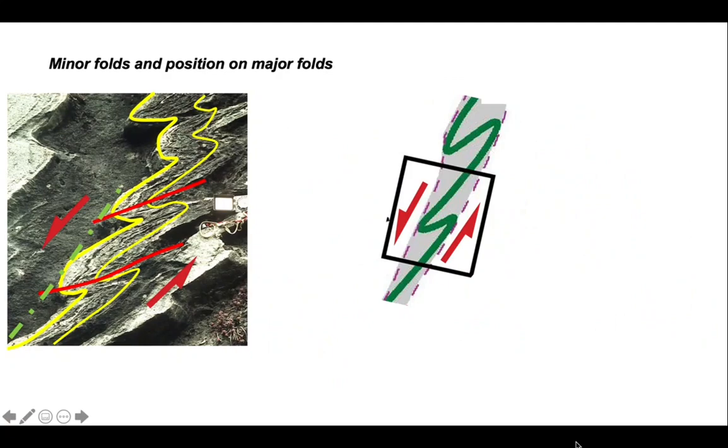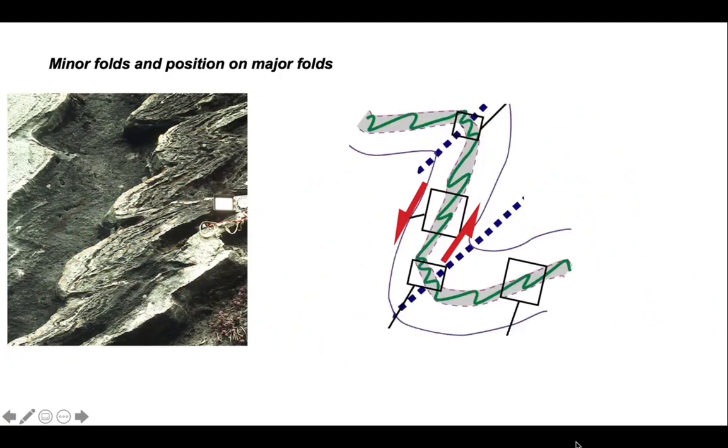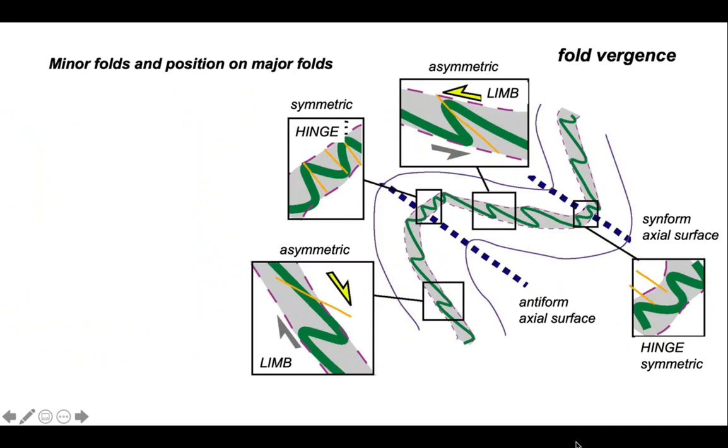We can represent that in the sketch and see that we are in this part of a fold structure. We have a sinform down to the right and an antiform up and to the left. Fold vergence complements the cleavage vergence approach to find the position of outcrops relative to major fold structures.